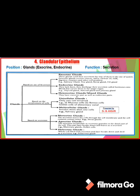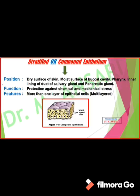In holocrine glands, the whole cell fills with secretion and later breaks down and is shed. The sebaceous gland is the best example of a holocrine gland. So we have merocrine, apocrine, and holocrine glands.